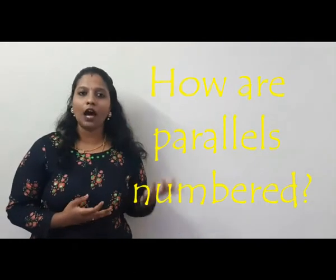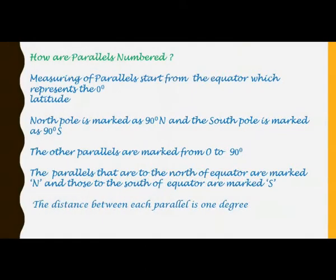Now let us learn how parallels are numbered. We measure parallels starting from the equator towards the pole. The equator is always represented at 0 degree latitude. The north pole is marked as 90 degree north and the south pole is marked as 90 degree south.